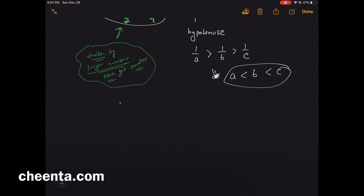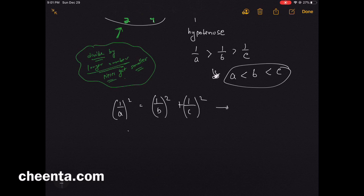So we have a second equation: (1/a)² = (1/b)² + (1/c)². The first equation was a² + b² = c².